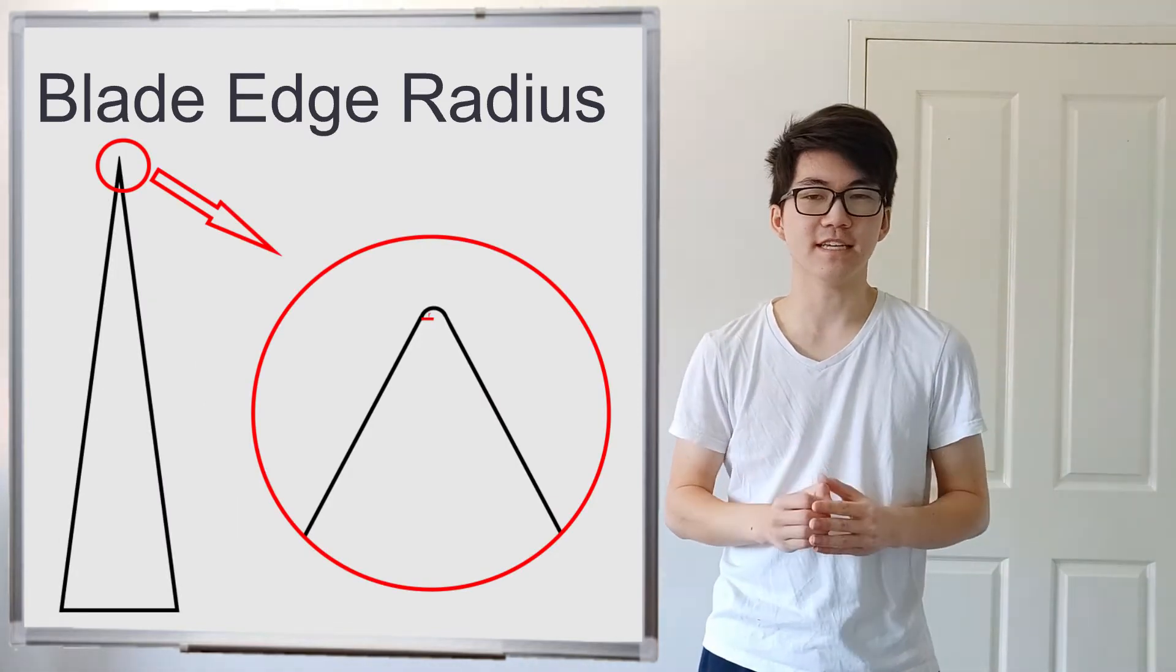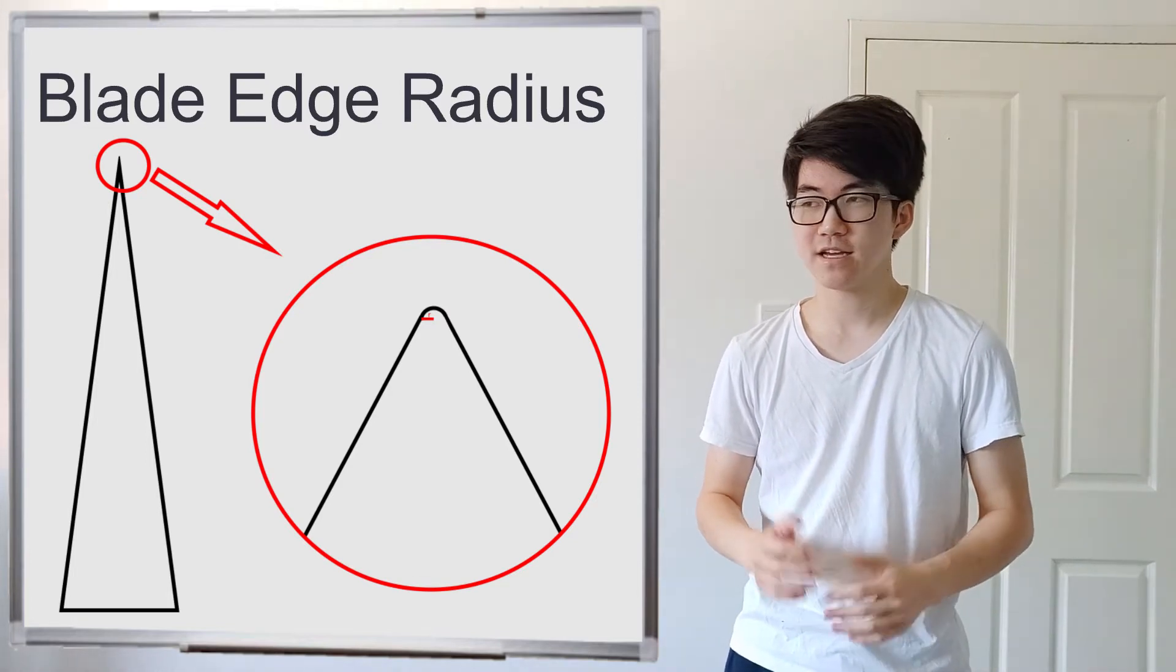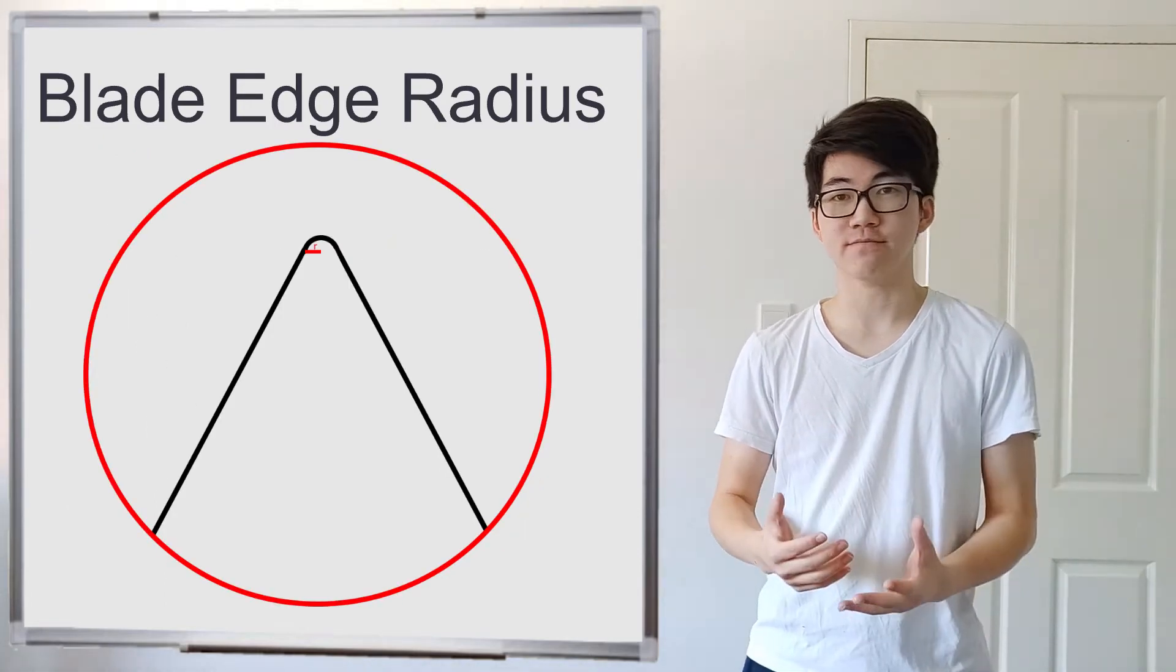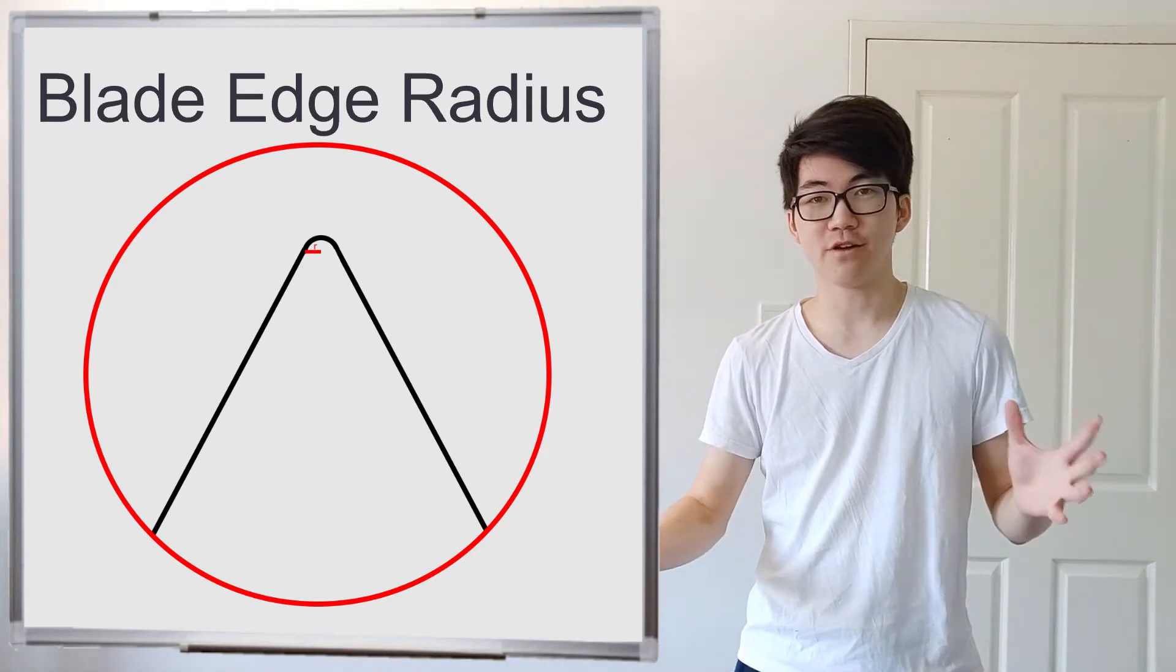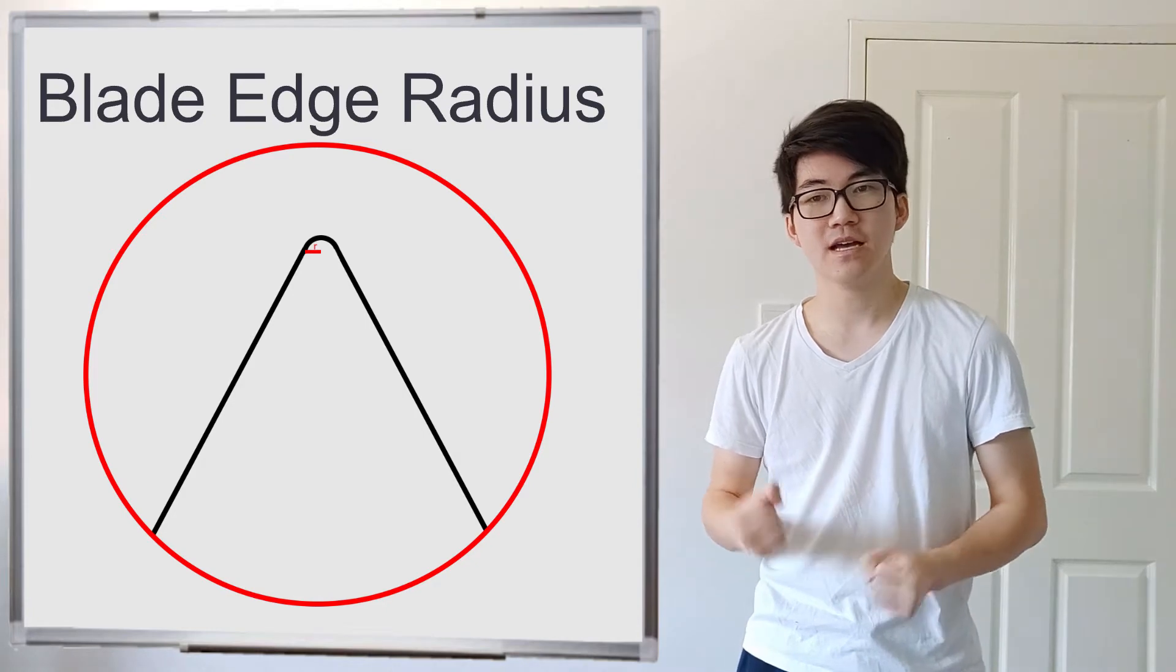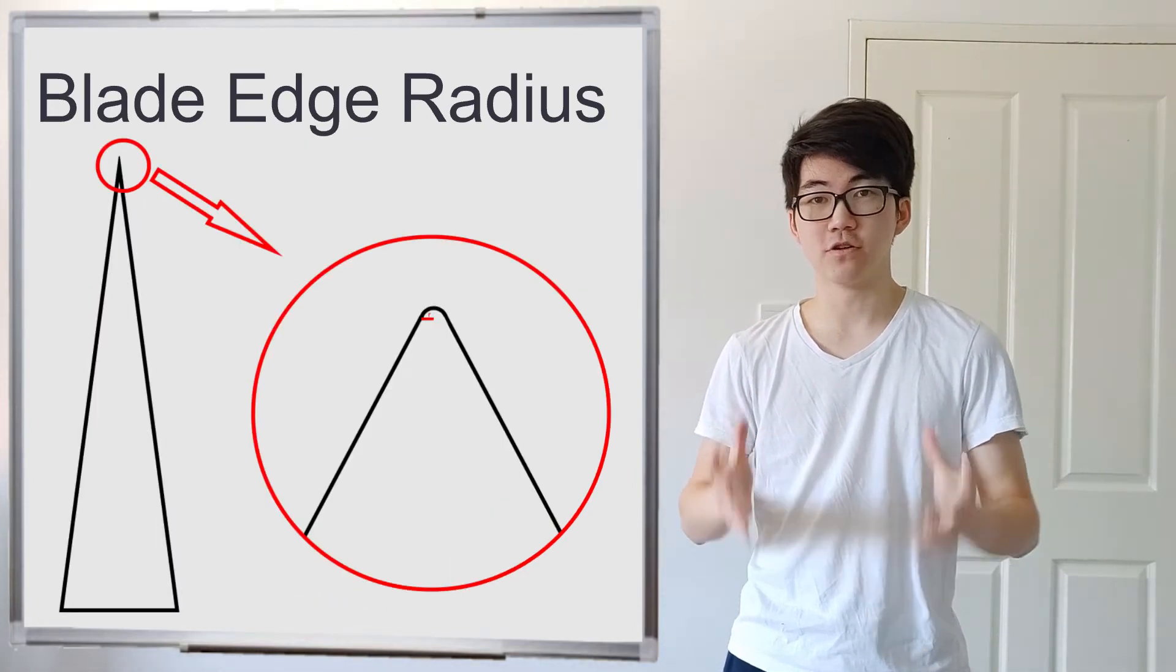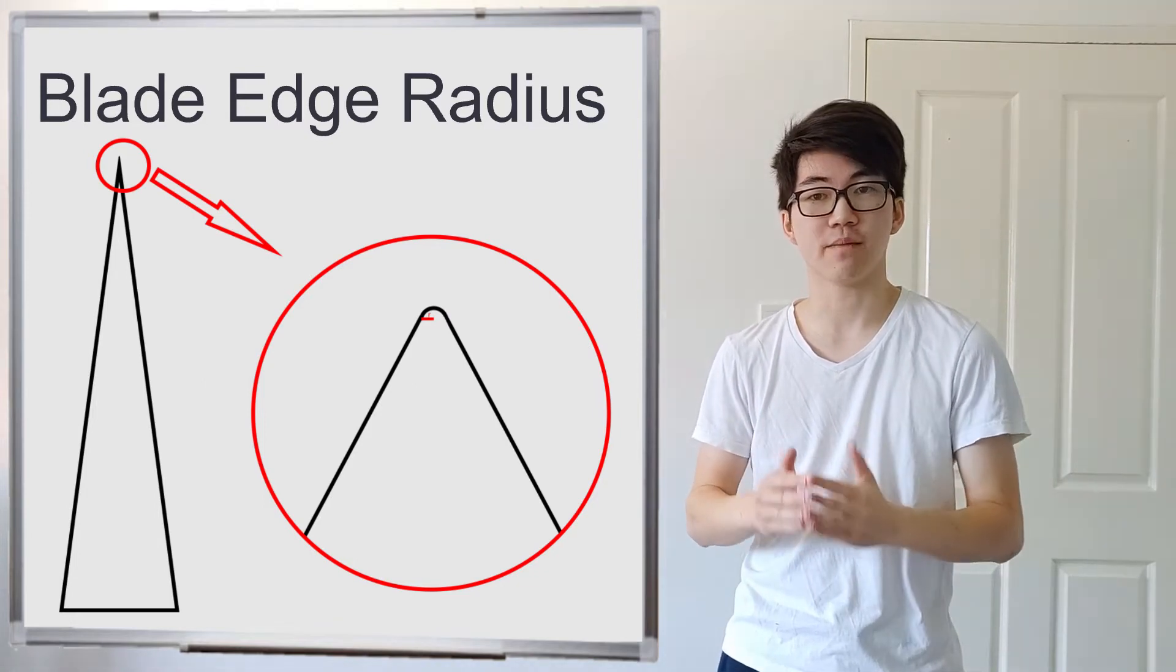So to understand this, you actually have to understand that nothing in the universe is a sharp point. Things are always round. Whether that's round at one atom diameter round, or round as in 50km radius, then everything is still round to some degree. But the smaller the radius is, the more likely that when you zoom out and you look at it from afar, the more likely it is to look like it is a sharp point.